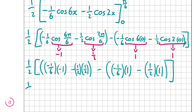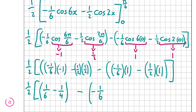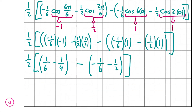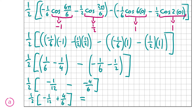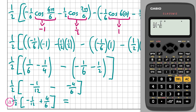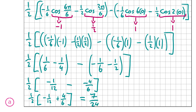Evaluating both brackets with half on the outside: in the first bracket, minus 1 over 6 times minus 1 is plus 1 over 6, and minus a half times a half is minus 1 over 4. In the second bracket we have minus 1 over 6 and minus a half. So we get half times: 1 over 6 minus 1 over 4, minus the bracket minus 1 over 6 minus a half, which equals half times minus 1 over 12 plus 4 over 6. Putting this into the calculator gives 7 over 24. So the answer for part A is 7 over 24.